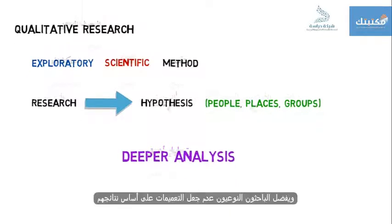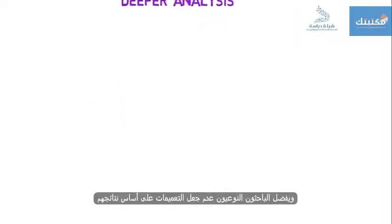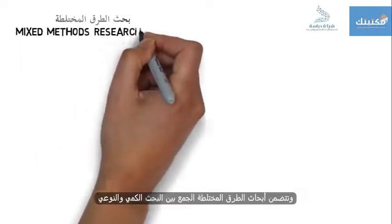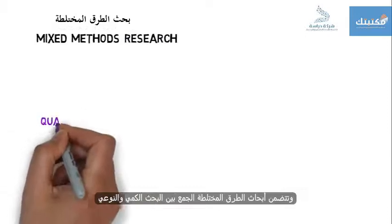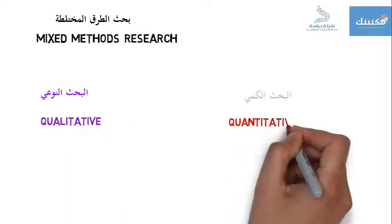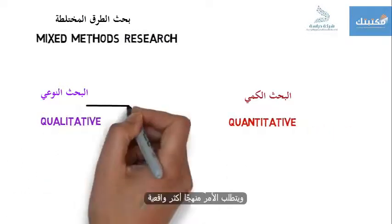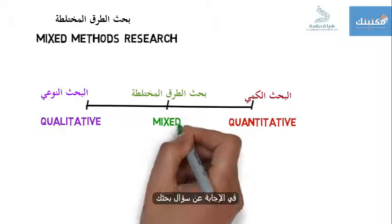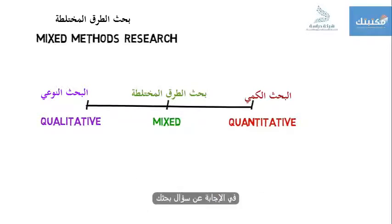Qualitative researchers prefer not to make generalisations based on their findings. Mixed methods research involves combining quantitative and qualitative research. It takes a more pragmatic approach whereby the type of research used should be based on what will best help you answer your research question.